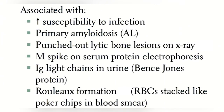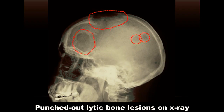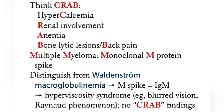Clinical features of multiple myeloma include increased susceptibility to infections due to decreased production of normal immunoglobulins. Overexpression of rank ligand in the bone marrow stroma causes increased activation of osteoclasts, resulting in bone resorption. This can result in lytic bone lesions that appear as punched-out lesions on plain radiographs, and can also result in hypercalcemia.